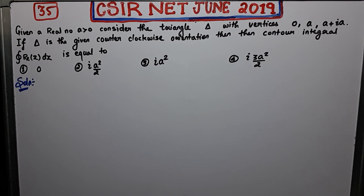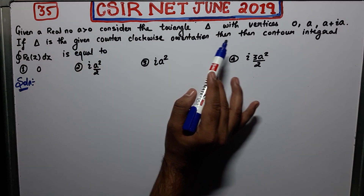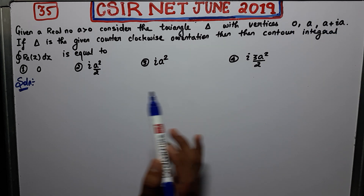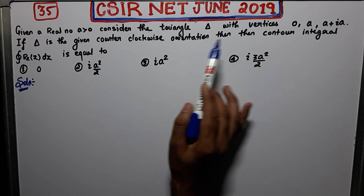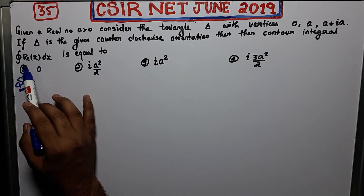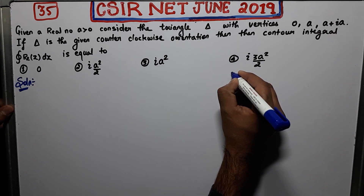Welcome guys. I am here with you to solve question number 35 of CSIR NET June 2019. This is actually a question from the topic complex analysis. Let us firstly read this question: given a real number a greater than zero, consider the triangle with vertices. These are the vertices of your triangle. If the triangle is the given contour with clockwise orientation, then the contour integral of this function Re(z) is equal to — so these are your options.